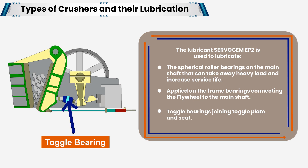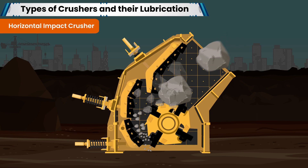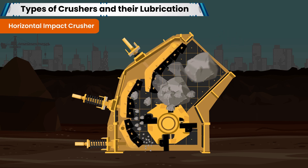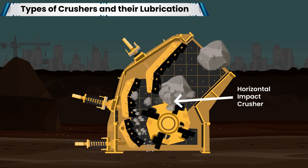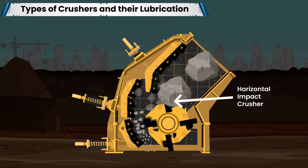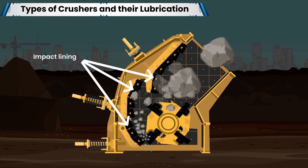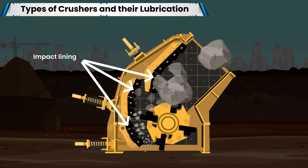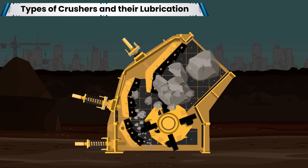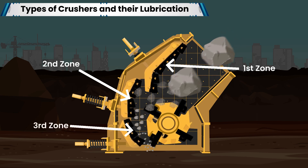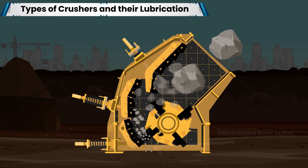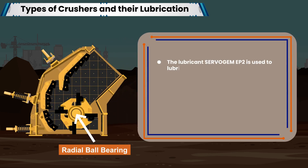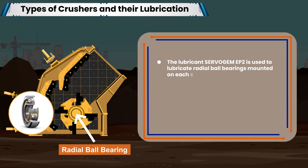In the horizontal shaft impact crusher, the rotor rotates at high speed under the driving of a motor. After the ores enter the action area of the hammer, they collide with the hammer on the rotor and are thrown to the impact device to crush again, then rebound from the impact lining to the hammer action zone to be crushed continuously. The material is crushed in the first, second, and third impact chambers from medium to small, and ores with the required size are discharged from the outlet. The lubricant Servo GEM EP2 is used to lubricate radial ball bearings mounted on each side of the hammer axle or main rotor shaft.